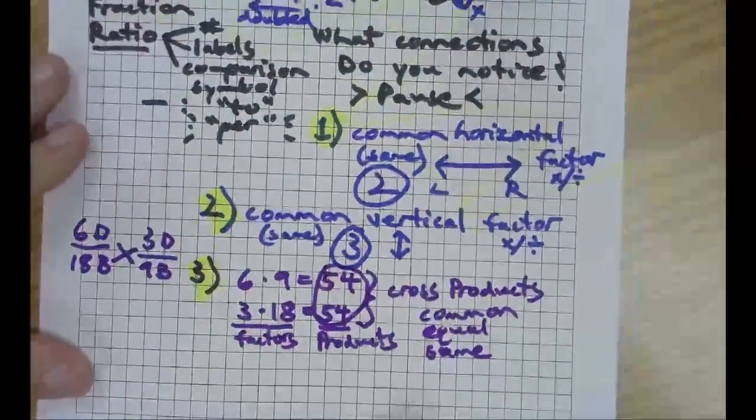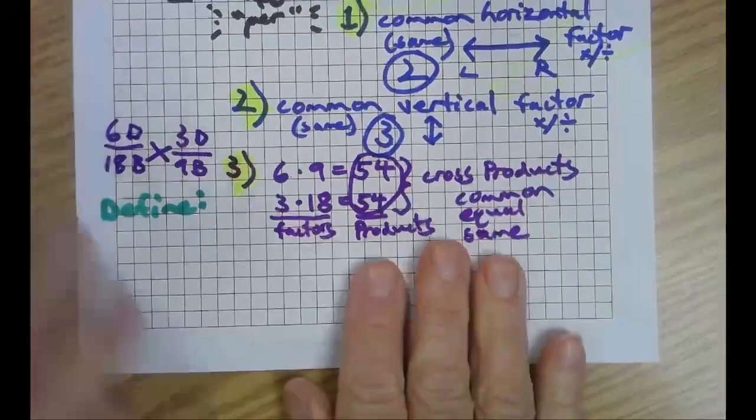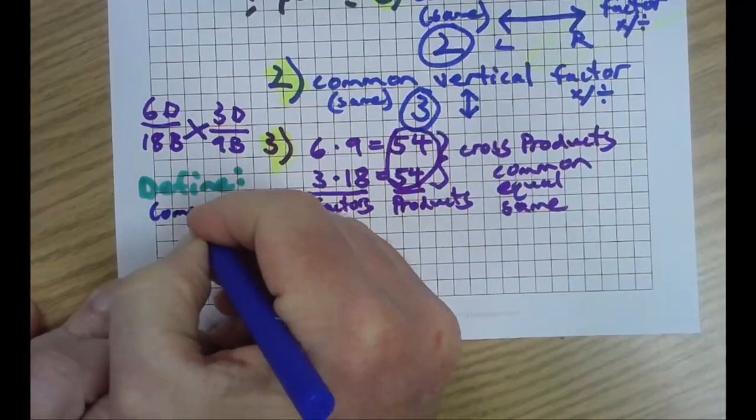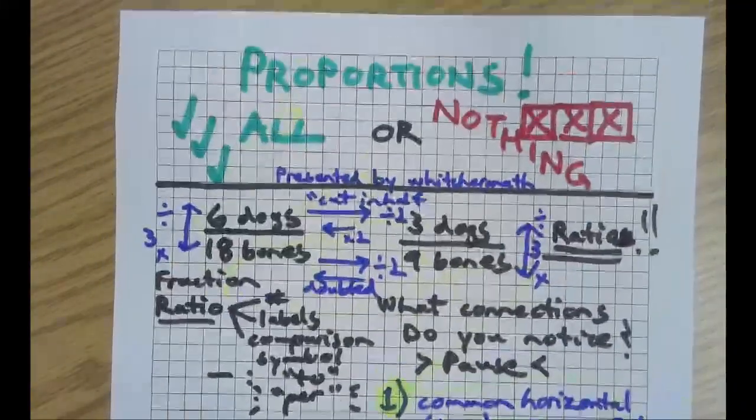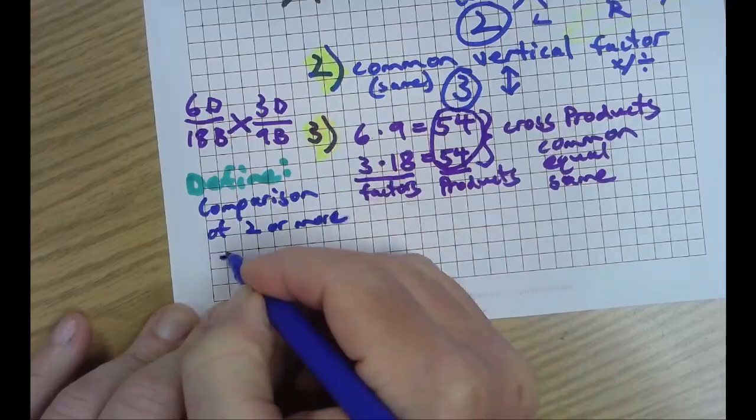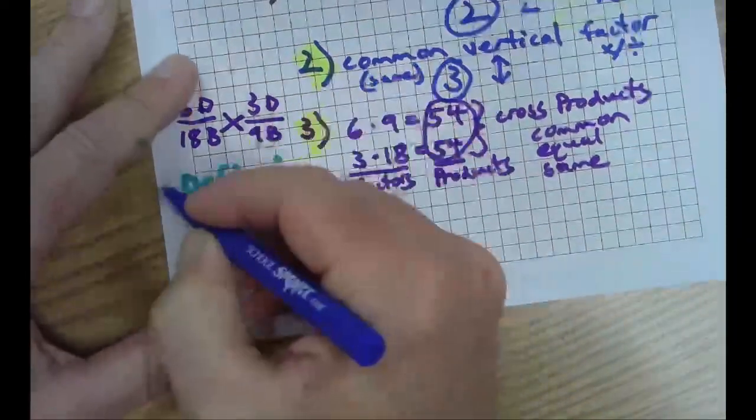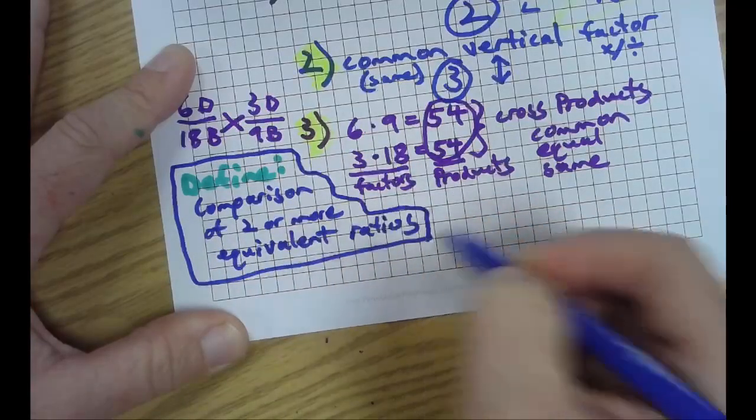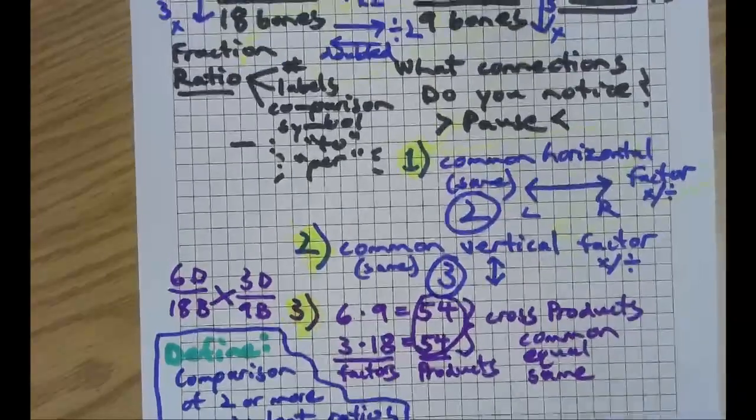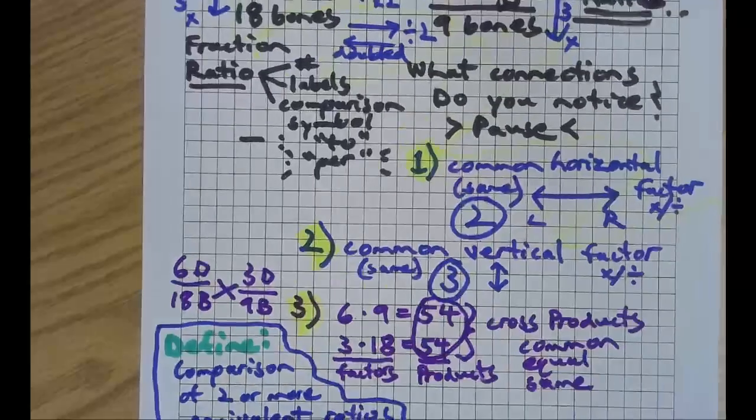So the point here is, when we have a proportion, which is, let's define, I know it's going to take extra time, but it's worth it. It's a comparison. What are we defining here? Yeah. The title. Proportions. Comparison of two or more equivalent, what's the magic word? Ratios. There's our nice little definition. Get it. If you didn't get it, get it. We have three ways to test for that, which was the highlighted three bullet points there. Common horizontal factor, common vertical factor, and common equal same cross products.